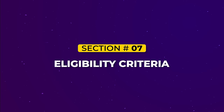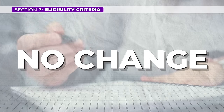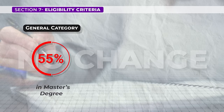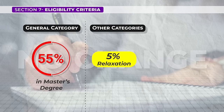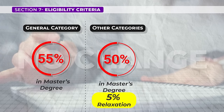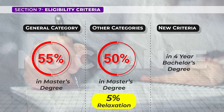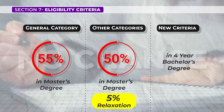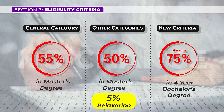Section 8: Eligibility Criteria. If we talk about the eligibility criteria, it is a big relief that there is no change seen with regards to the same. As was the case previously, a candidate from the general category has to score 55% in the master's degree of the concerned subject, and the rest of the categories will get 5% relaxation, making the eligibility score 50%. A new eligibility criterion has also been introduced wherein a student in a 4-year bachelor's degree program can also sit for the UGC NET exam, with a minimum score of 75%, and 5% relaxation for other categories.